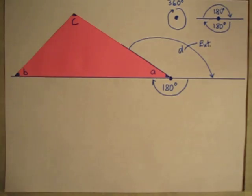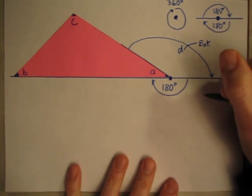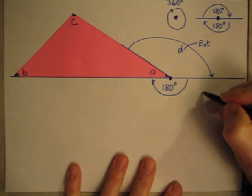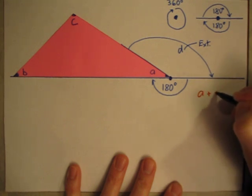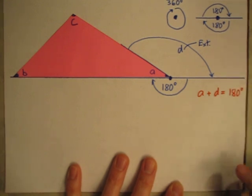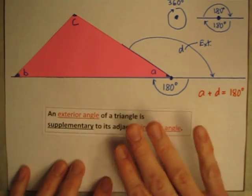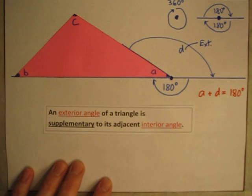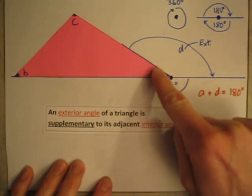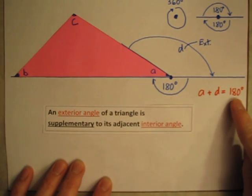From our previous theorem, we know that angle A plus angle D must add up to 180 degrees, because an exterior angle of a triangle is supplementary to its adjacent interior angle. They are adjacent — angle D is exterior, angle A is interior — so they will add to 180 degrees.